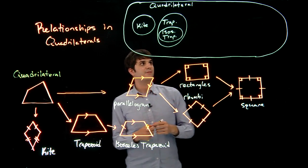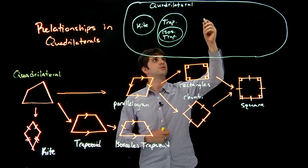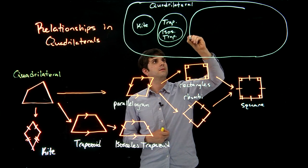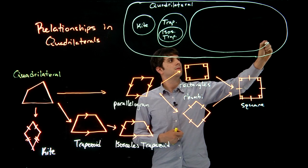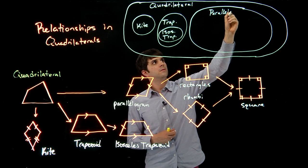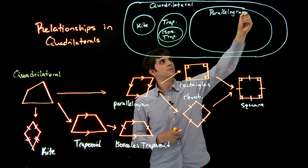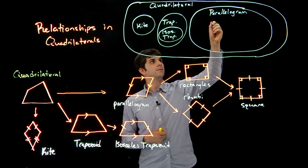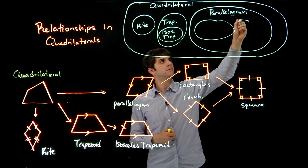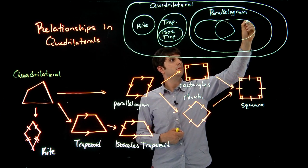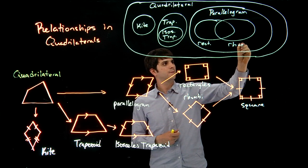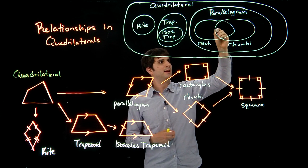And then we have the world of parallelograms, which is pretty big. So we have this world over here, is going to be parallelograms. And then within that, we have rectangles, we have rhombi, and we have squares.